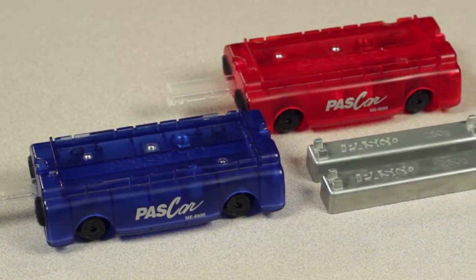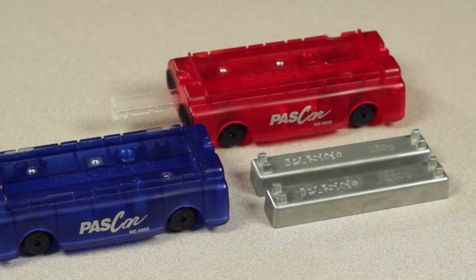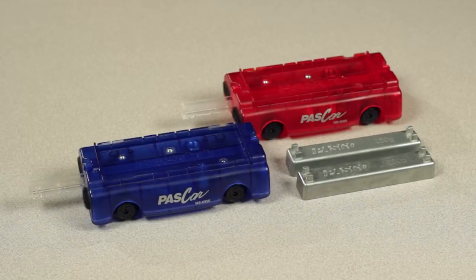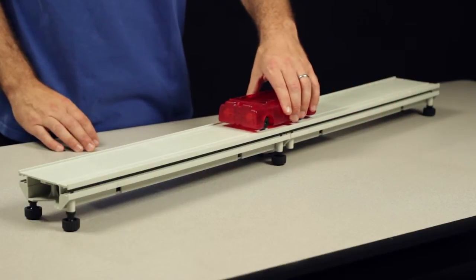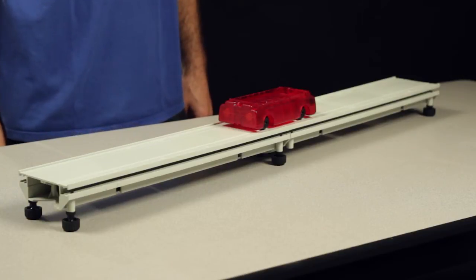The ME6950 Pascar set includes two low-friction Pascar carts and two 250g cart masses. Every Pascar is designed to fit within the recessed tracks found on any Pascodynamics track.